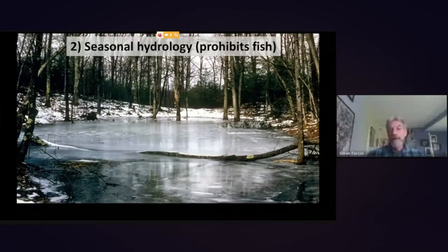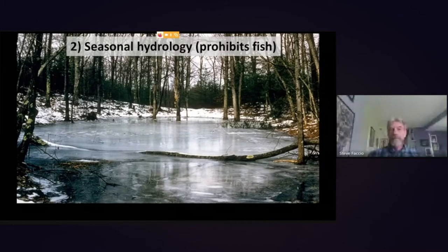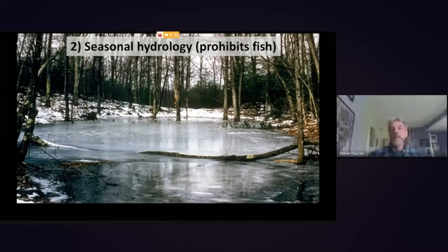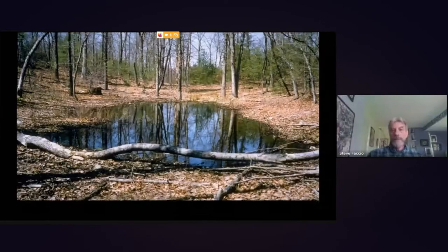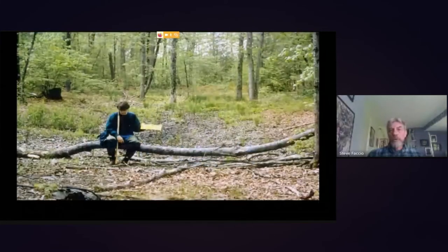Vernal pools have a distinct seasonal hydrology. Not connected to permanent wetlands, they're fed by surface runoff — rain and snow melt. They dry in summer and fill again in the fall, reaching maximum capacity in early spring with snow melt and spring rains. As the season progresses through warmer months, the pool shrinks and dries. By midsummer most pools are dry, though some may only dry in drought years.